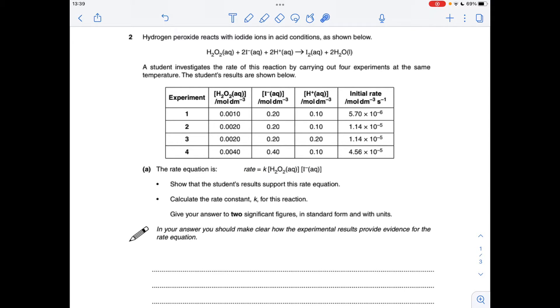So if you have a look at experiments 1 and 2, you can see I- and H+ don't change. So the H2O2 concentration's doubled, and the rate has also doubled. So it's first order with respect to H2O2. I would literally just summarize it like that. There's no need to write a waffly sentence.